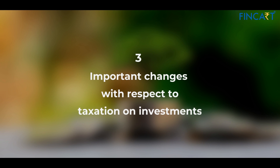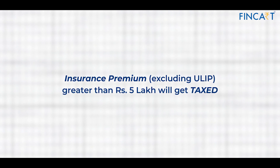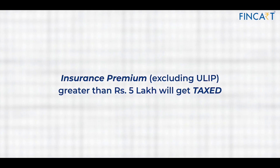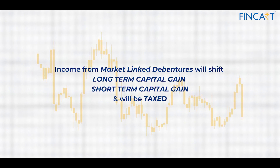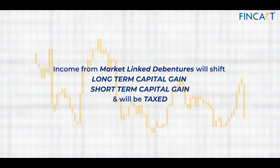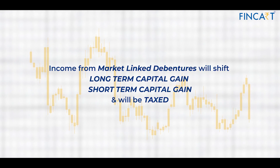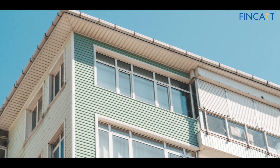There are three important changes from a taxing-investments perspective. First, insurance premiums other than ULIP of greater than five lakh will get taxed — the income from that will be added to your annual income and you'll have to pay tax. Second, income from market-linked debentures, which was classified as long-term capital gains, will now be moved to short-term capital gains and taxed at the respective slab rate.